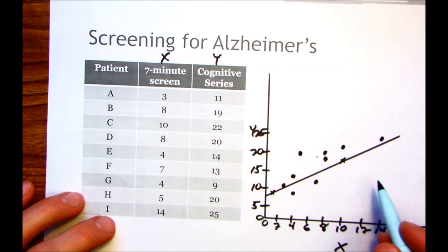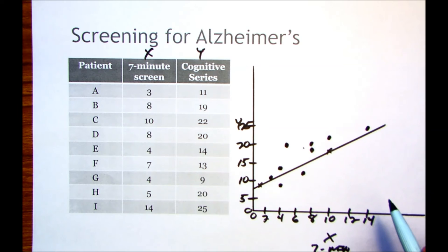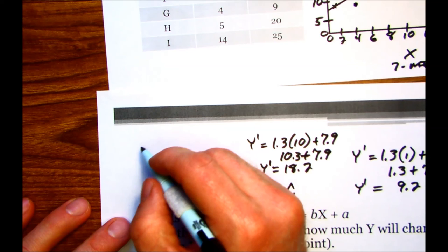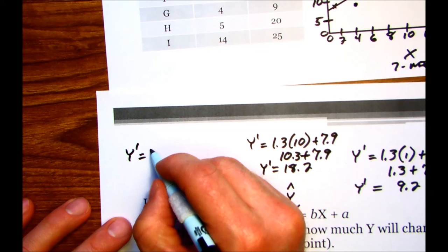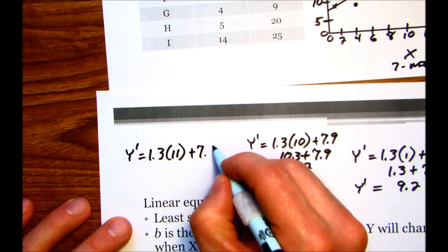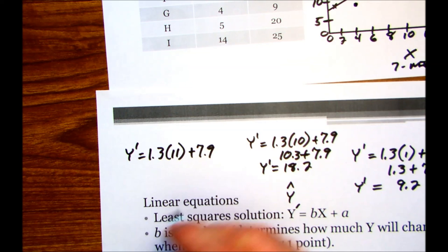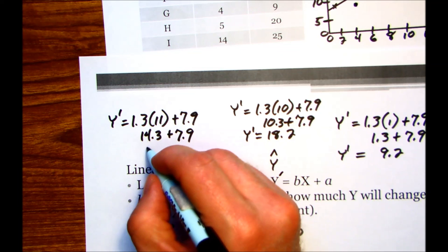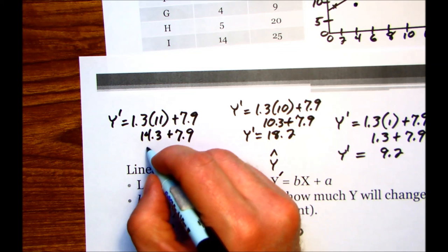And from that regression line, we can start making predictions from that regression line. And also, with any of these, if we know that, let's say, if we know that Harold's score, he scored an 11 on the 7-minute series. If we just plug that into the equation, if we want to get his predicted y score from that, times 11, times 11, plus 7.9. We've got 14.3, plus 7.9. 22.2. So if Harold scored an 11 on the 7-minute cognitive screen, we'd expect his total cognitive series score to be 22.2.